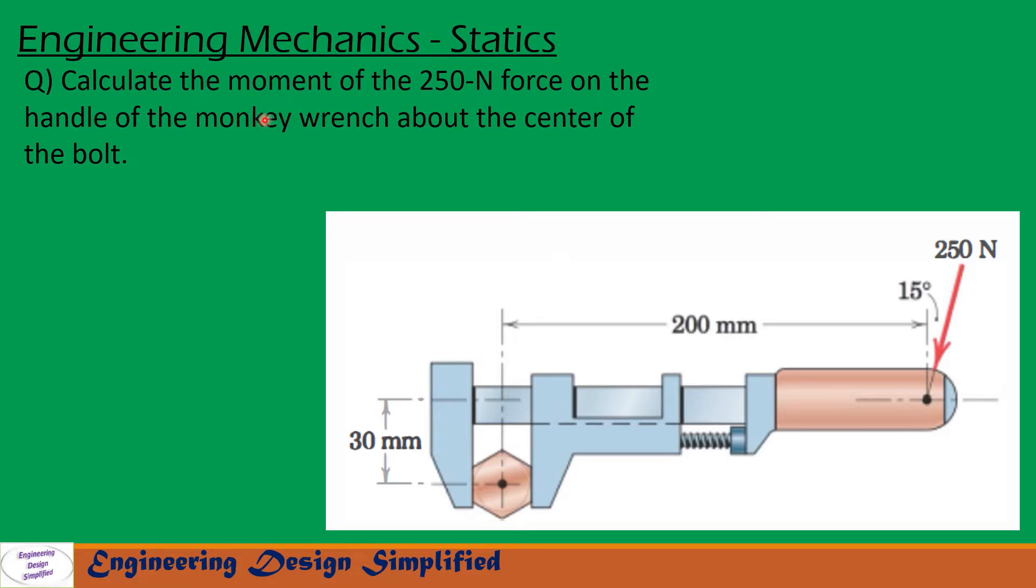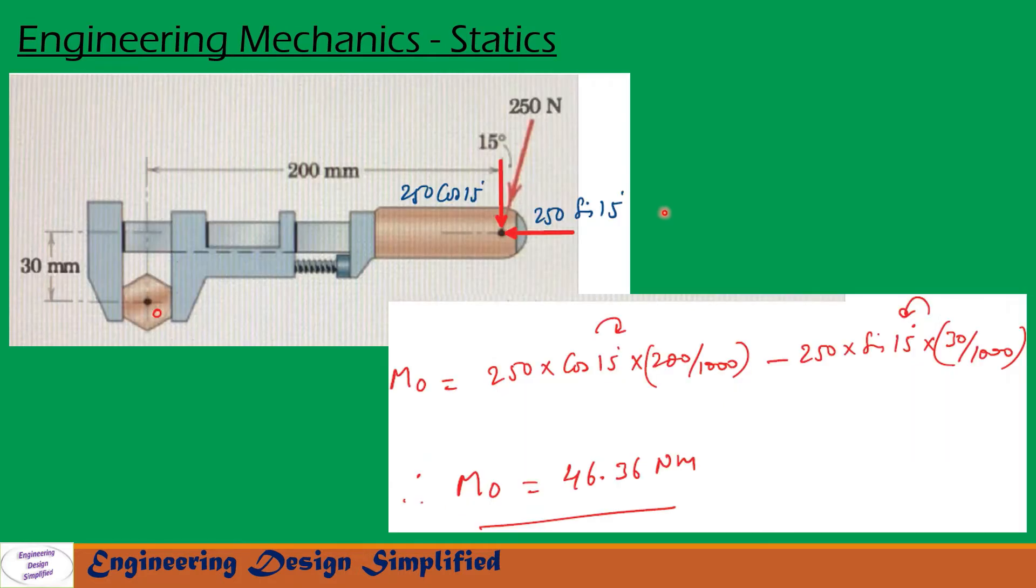Let us see in the coming slides how to solve this problem. First, let us resolve this 250 Newton force along vertical and horizontal. Since this angle is 15 degrees, the vertical component will become 250 cos 15 and the horizontal component will become 250 sin 15. So now we have two forces, one vertical and one horizontal, and we have two lengths here.